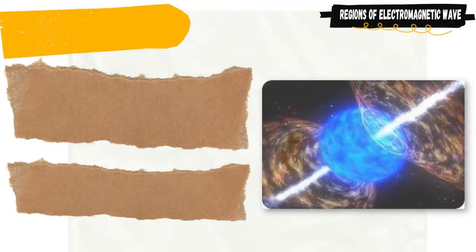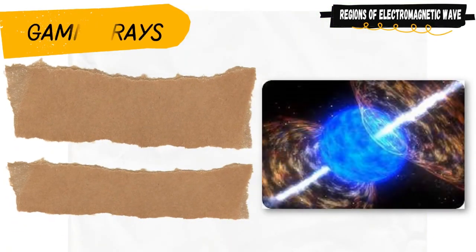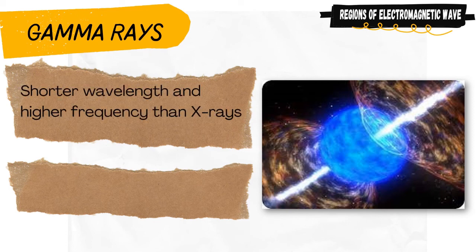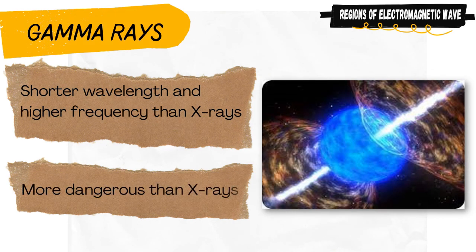Gamma rays are high-energy waves produced from nuclear reactions. They have shorter wavelengths than X-rays because energy changes within the nucleus are normally much larger than those that take place outside it. They are more dangerous than X-rays because radioactive substances emit them.